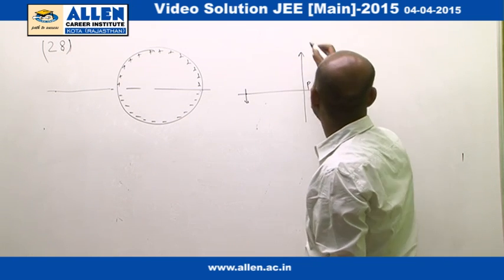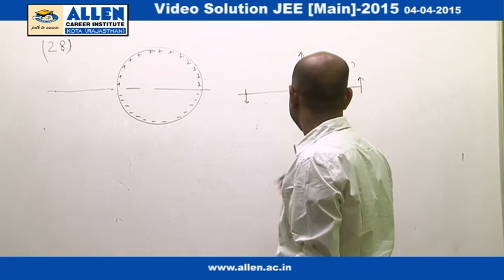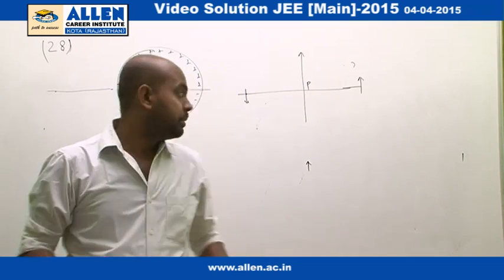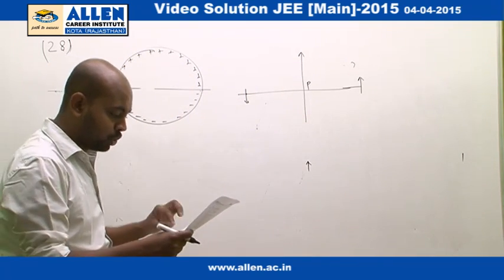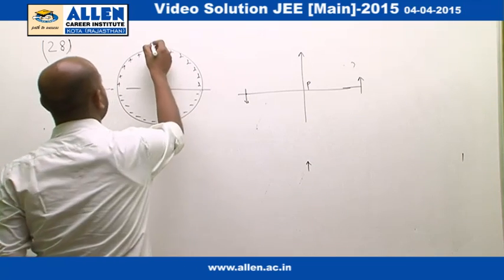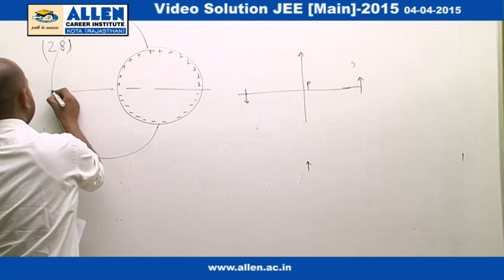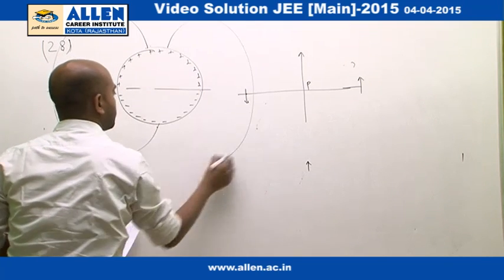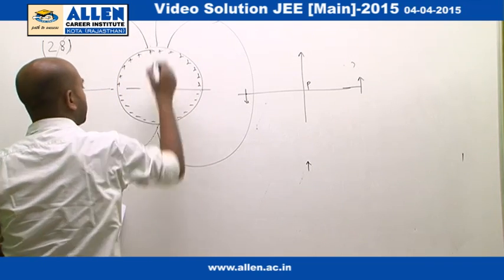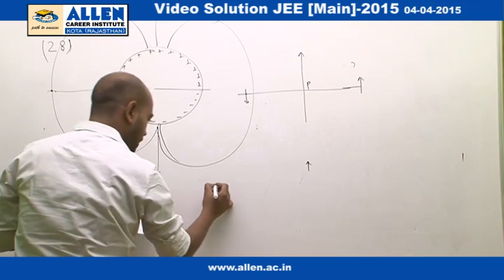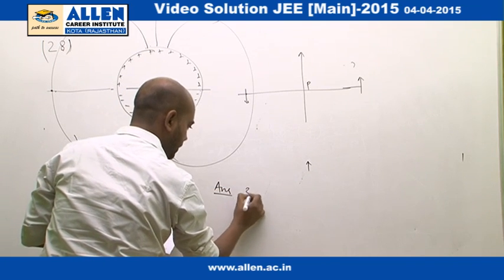At this point the electric field would be in upward direction, at this point it will be upward, and at this point it would be upward again. By looking at these four points, you can identify that only option number two matches — where the electric field lines are given like this — so the answer of this question would be option number three.